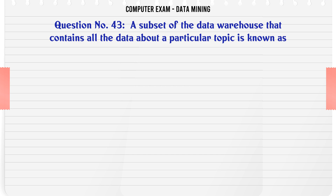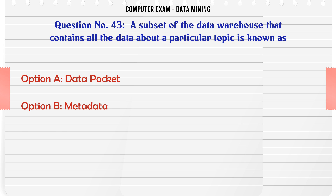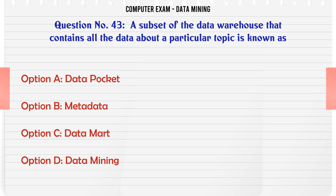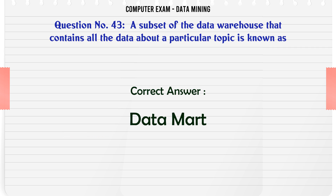A subset of the data warehouse that contains all the data about a particular topic is known as: A. Data pocket. B. Metadata. C. Data mart. D. Data mining. The correct answer is Data mart.